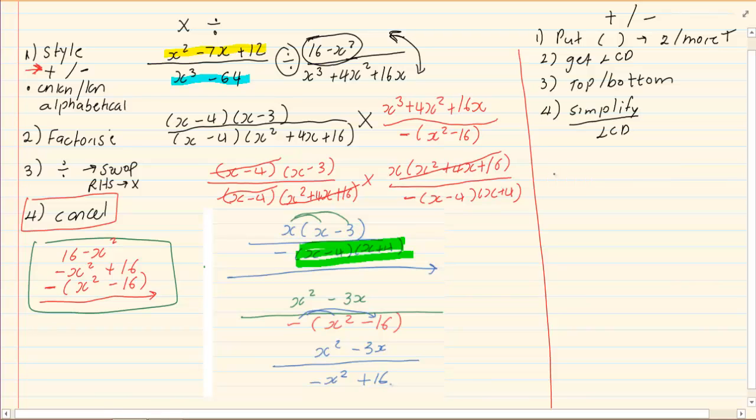So, if I have got x squared minus 16 all over 5x minus 20 minus x squared minus 3x plus 2 all over 3x minus 3. Now, we are going to first put our brackets around any expression that has two or more terms.